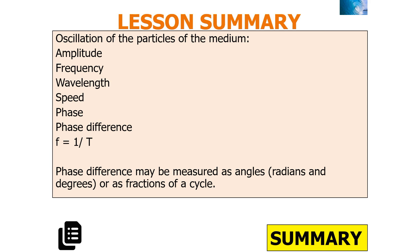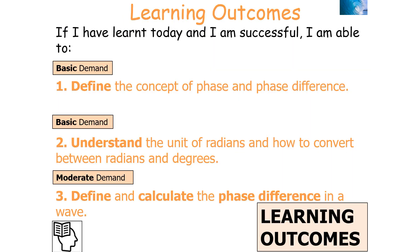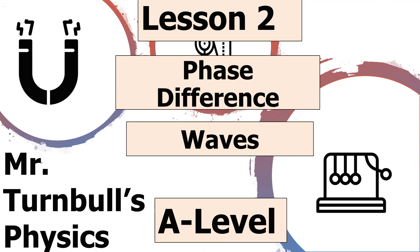In this lesson we've looked at the oscillations of particles in a medium, considering amplitude, frequency, wavelength, and speed, but more importantly phase and phase difference. Phase difference may be measured as angles in terms of radians or degrees, or as a fraction of a cycle. We should now be able to define the concept of phase and phase difference, understand the unit of radians and how to convert between radians and degrees, and define and calculate the phase difference in a wave. Thank you very much for watching this lesson on phase difference, which is part of the waves topic for AQA A-level physics.